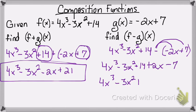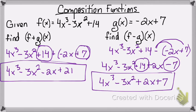I'll bring down my positive 2x because I don't have any like terms with that. And then I'll combine my 14 minus 7 to get positive 7. And that's my final answer.